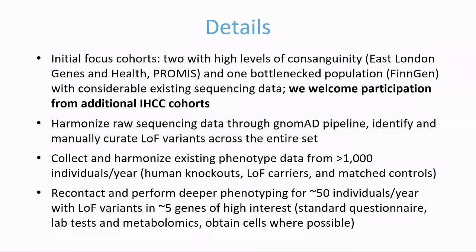We plan to focus on cohorts enriched for homozygous loss-of-function individuals. These include two cohorts with high levels of consanguinity — the East London Genes and Health Cohort, led by David Van Heel, and the PROMIS cohort based in Pakistan — and one bottlenecked population, the FinnGen cohort. All three have considerable existing sequencing data. We would also welcome participation from other IHCC cohorts where human knockouts are likely present and sequencing data has already been generated.